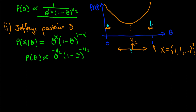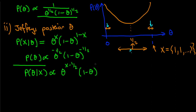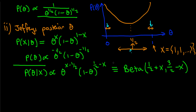That's the same as what's written above — I've just used negative powers to represent the fraction. Because the posterior is proportional to the product of the likelihood and the prior, we obtain p(theta | x) proportional to theta to the power (x minus 1/2) times one minus theta to the power (1/2 minus x). Comparing with beta densities, this is equivalent to a Beta(1/2 + x, 3/2 − x). We've used a conjugate prior, so we get a beta posterior.